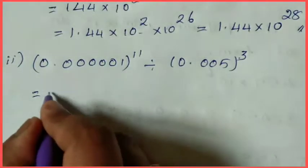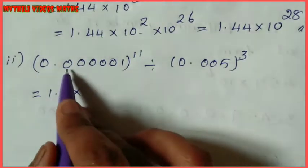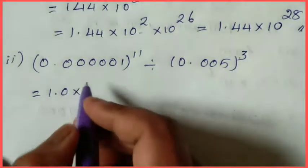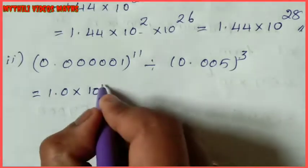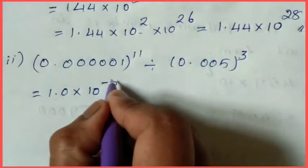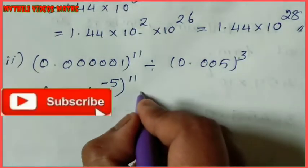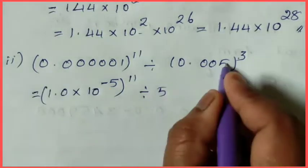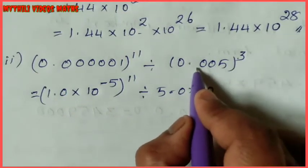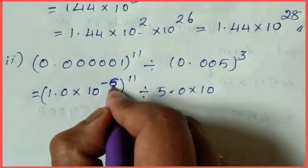For the next subdivision: starting with 1.0 in scientific notation. Count the zeros: 1,2,3,4,5. So we write 10 to the power 6.